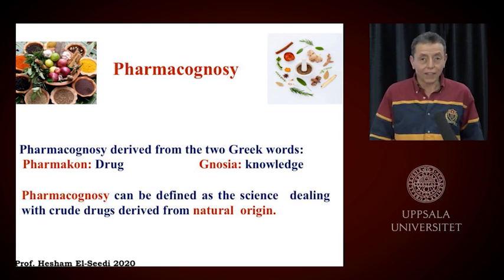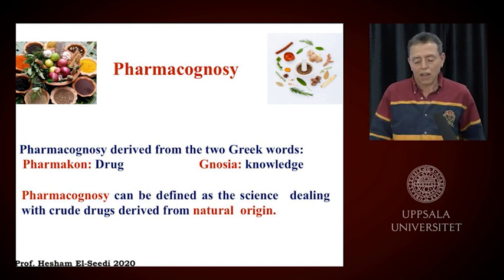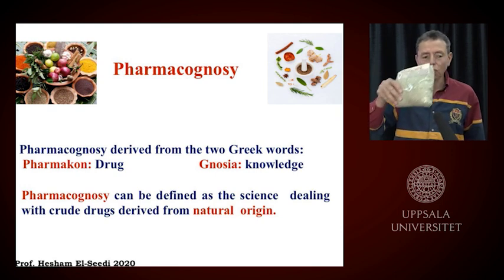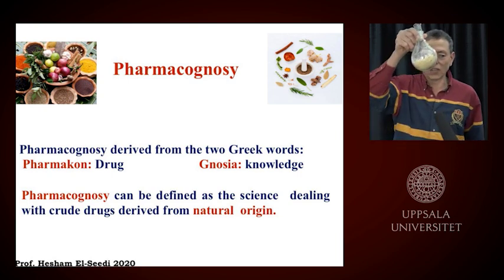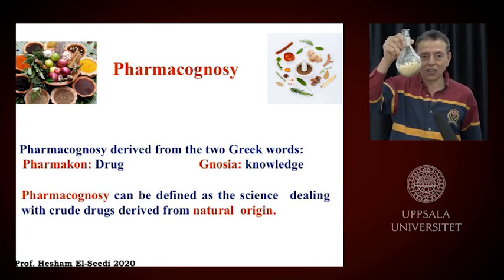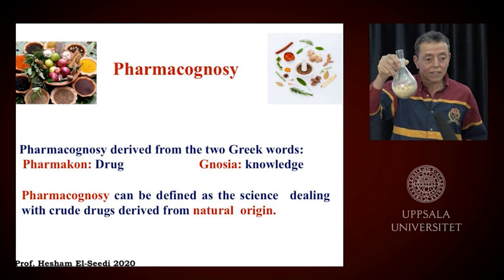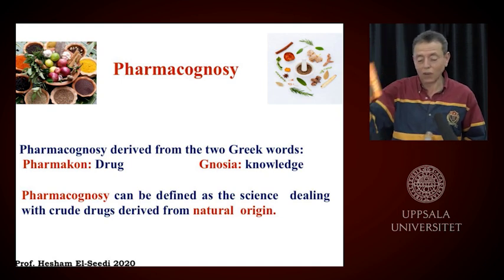When we talk about pharmacognosy, it is derived from a Greek word. 'Pharmaco' means drug, and 'gnosis' means knowledge. So it is the knowledge of drugs. We deal with any drugs that come from natural origin, like plant material. We do extraction first to get the extract. If it shows activity and no toxicity, and if approved by the government based on ethics, until you get a drug from this plant material — this means it is pharmacognosy.